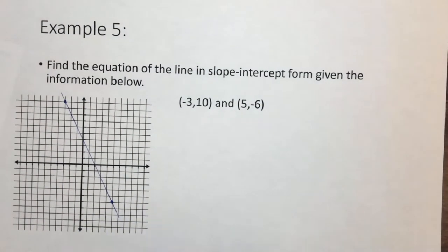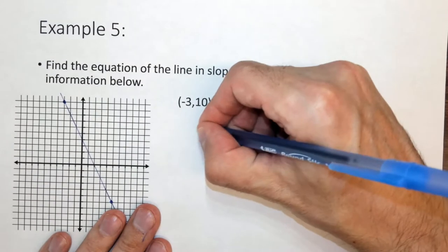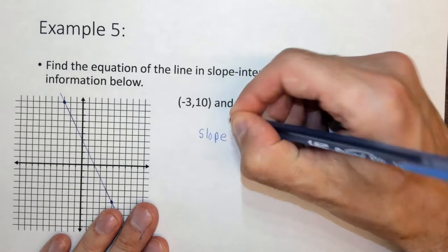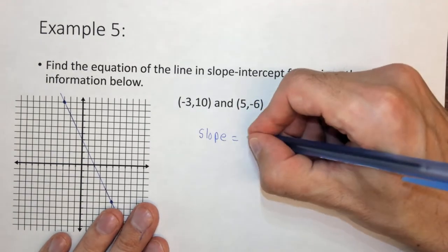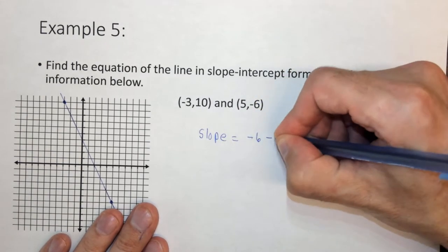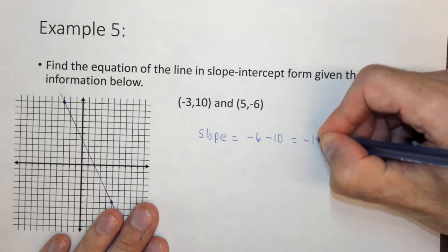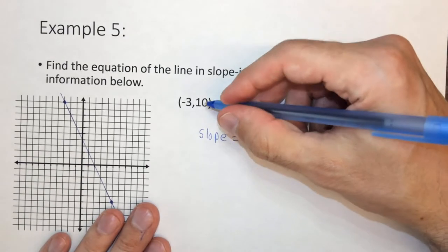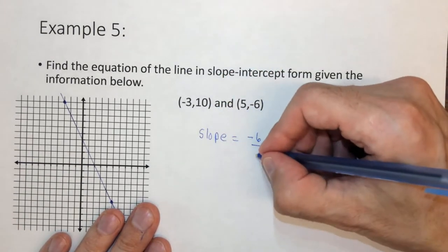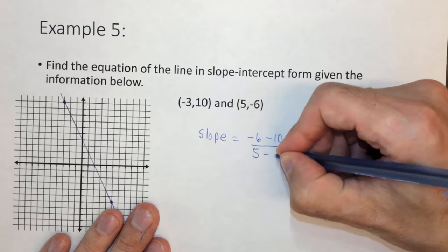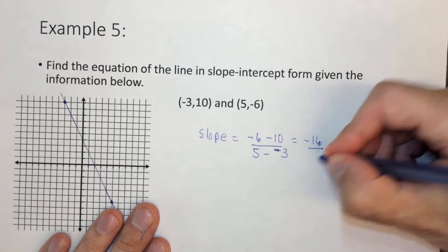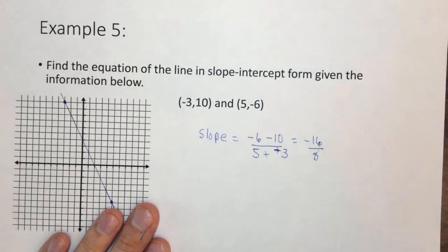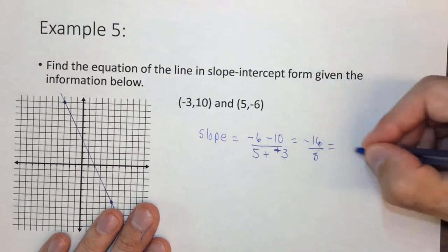So now we need to find y equals mx plus b, the slope and the y-intercept. So the slope, as you know, is delta y over delta x. So delta y is minus 6 minus 10, which is minus 16, and delta x is 5 minus minus 3, which is 8, because it's minus a negative we add, which is negative 2.